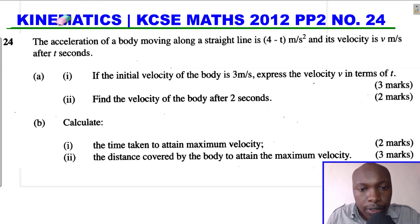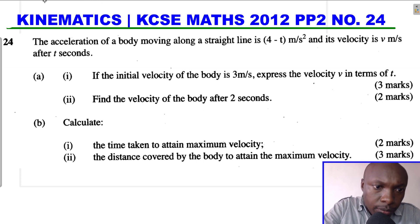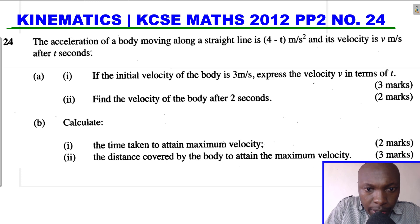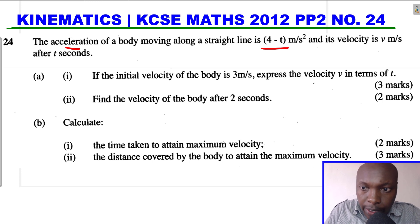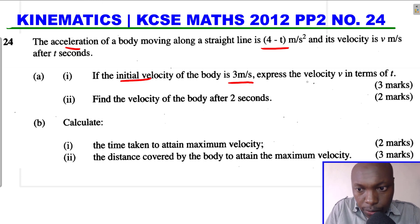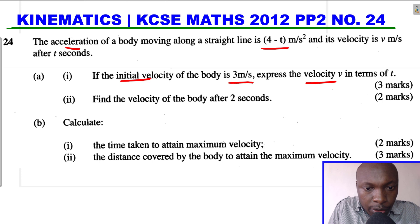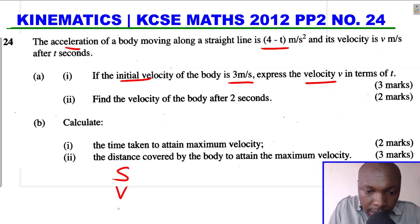Before we begin, it's good to note what we're given. Acceleration is a = (4 minus t) m/s², and the initial velocity is 3 m/s. There's an important rule to follow when solving kinematics: we have s for distance, v for velocity, and a for acceleration arranged in a hierarchy.